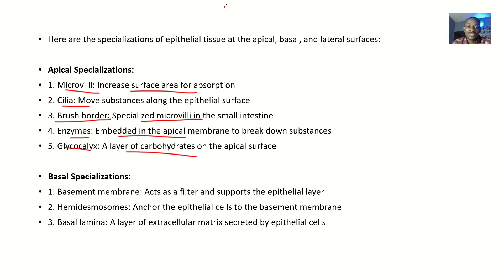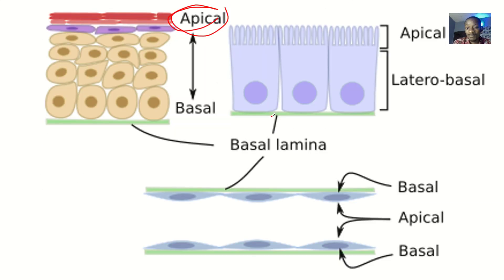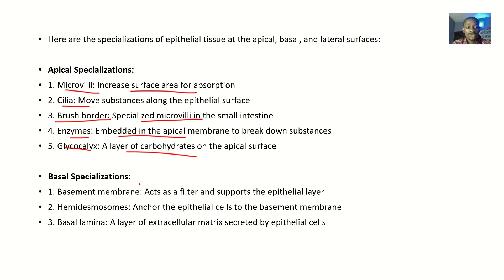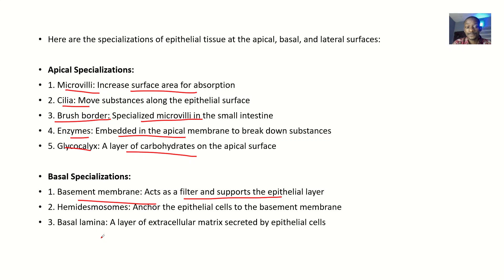Now let's move to the basal specializations — basically the base of the cell and how it can help the cell in absorption. We have the basement membrane, which acts as a filter and supports the epithelial layer. If there's no filter, anything that goes through the cell just goes into your body, which will not be good.